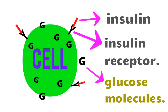Insulin also helps in converting excess glucose molecules into glycogen, which is stored in the liver. In diabetes patients, the body is not forming an adequate amount of insulin, so blood glucose levels continuously increase and symptoms like polyuria, polydipsia, and polyphagia occur. To treat these excess blood glucose levels, we administer insulin to diabetes patients.